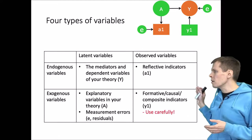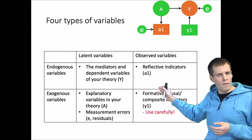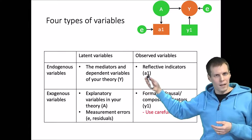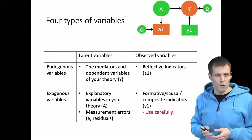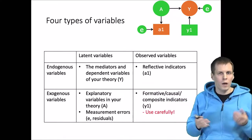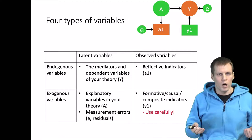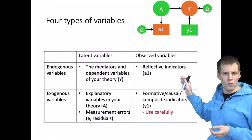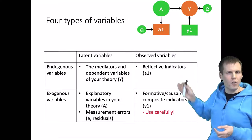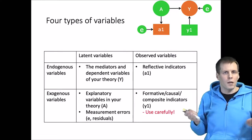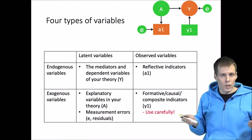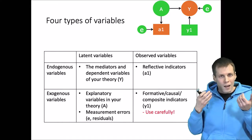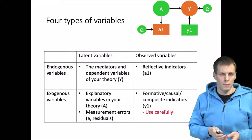Latent variables represent constructs in our theory, and quite often in a factor analytical model we model what we call reflective indicators. So a1 is an indicator — it depends on factor A and some error term e, which represents measurement error.